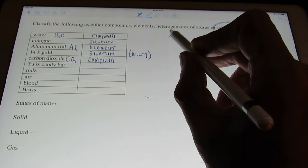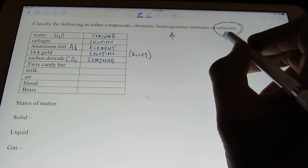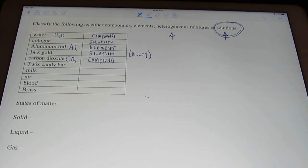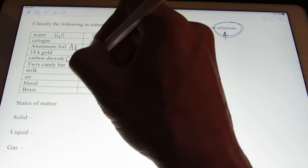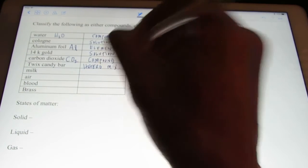Is it uniform throughout? If it were uniform throughout, we call it a solution. Or is it not uniform throughout? A heterogeneous mixture. Well, we've got layers there, don't we? It's obviously not uniform. So, a Twix candy bar would be a heterogeneous mixture.